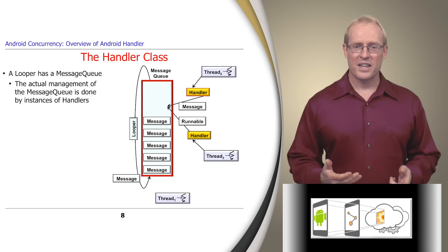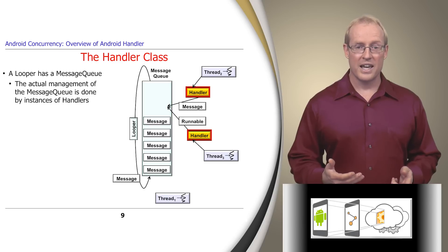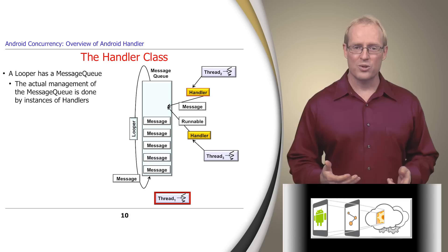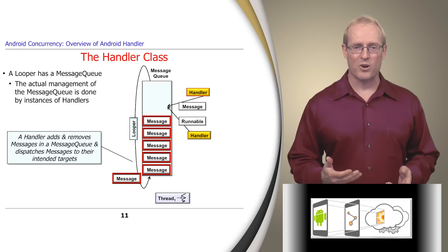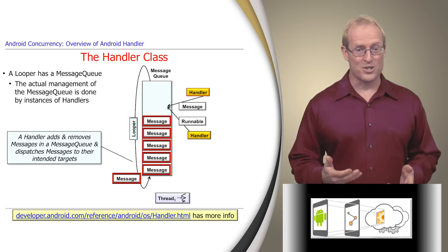However, the actual management of the message queue is done by instances of the Android handler class, each of which is associated with a single thread and is responsible for adding and removing messages in the thread-specific looper's message queue, as well as dispatching messages to their intended targets, as described at this link.